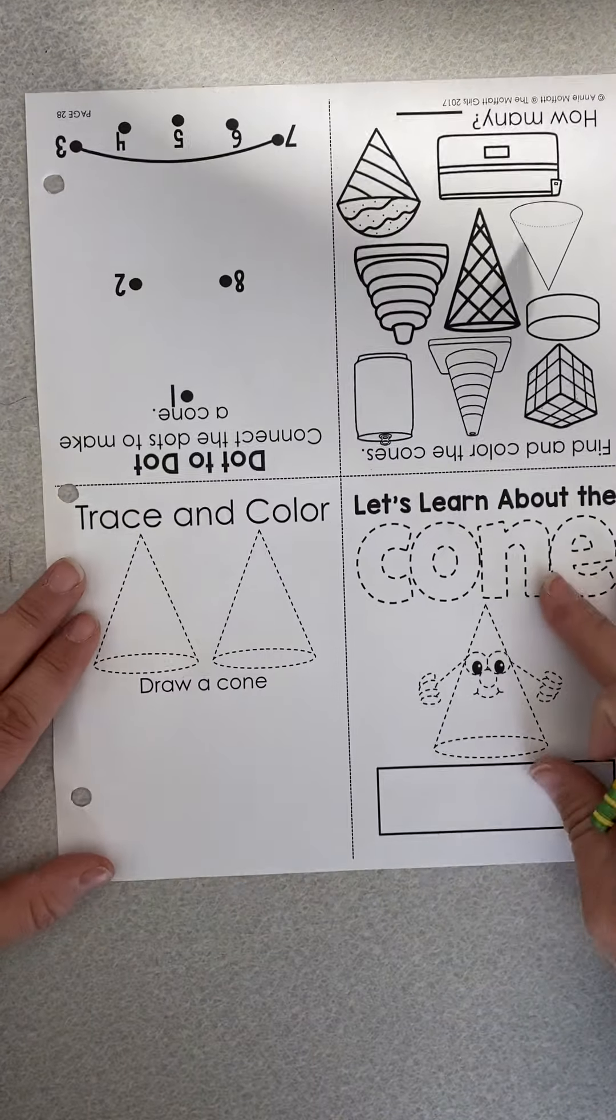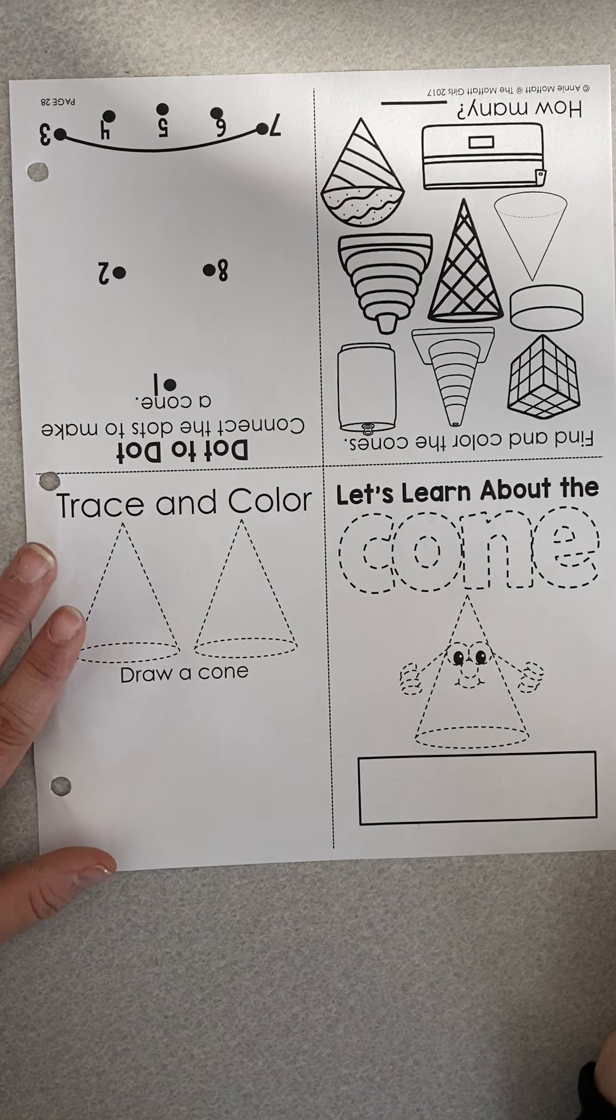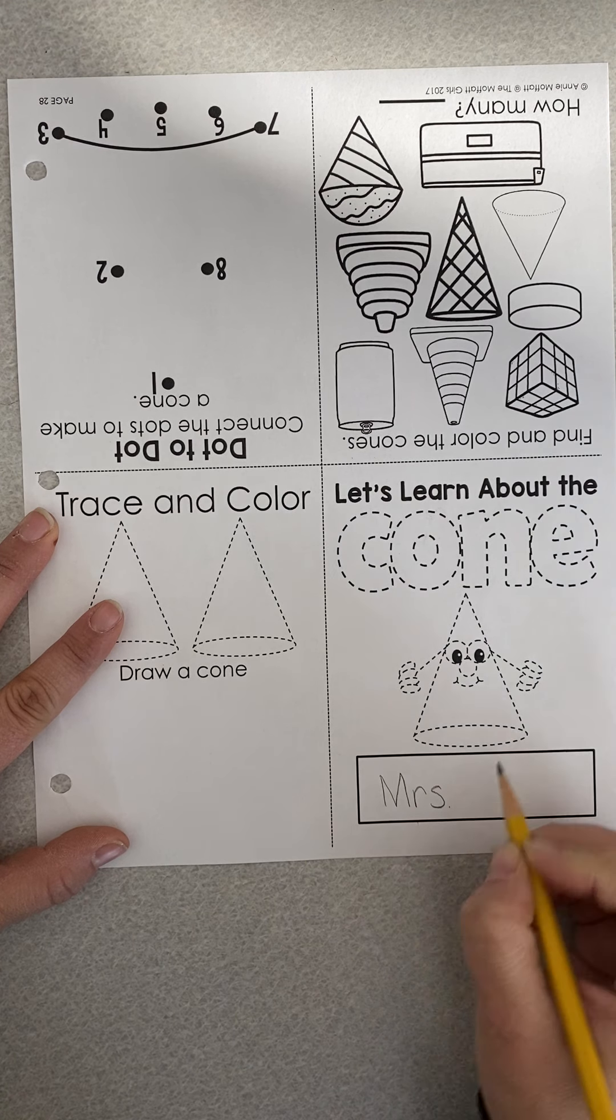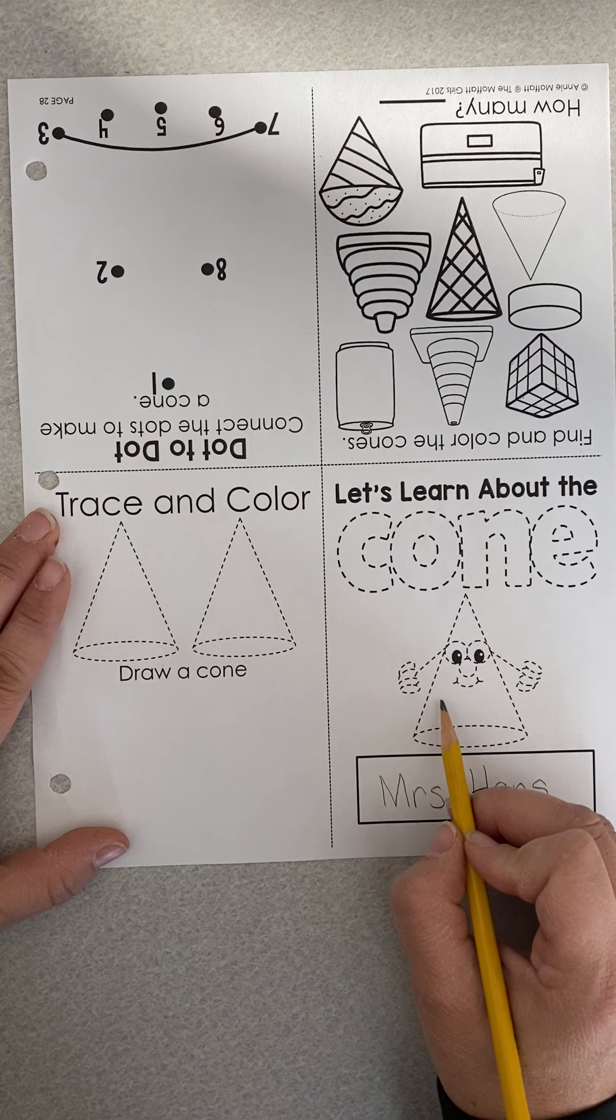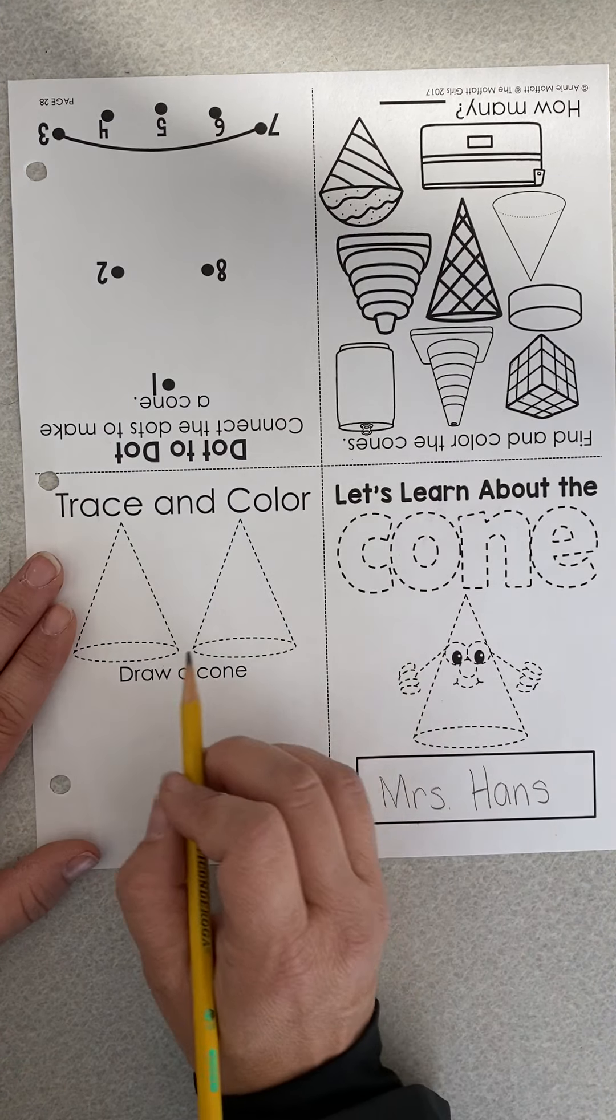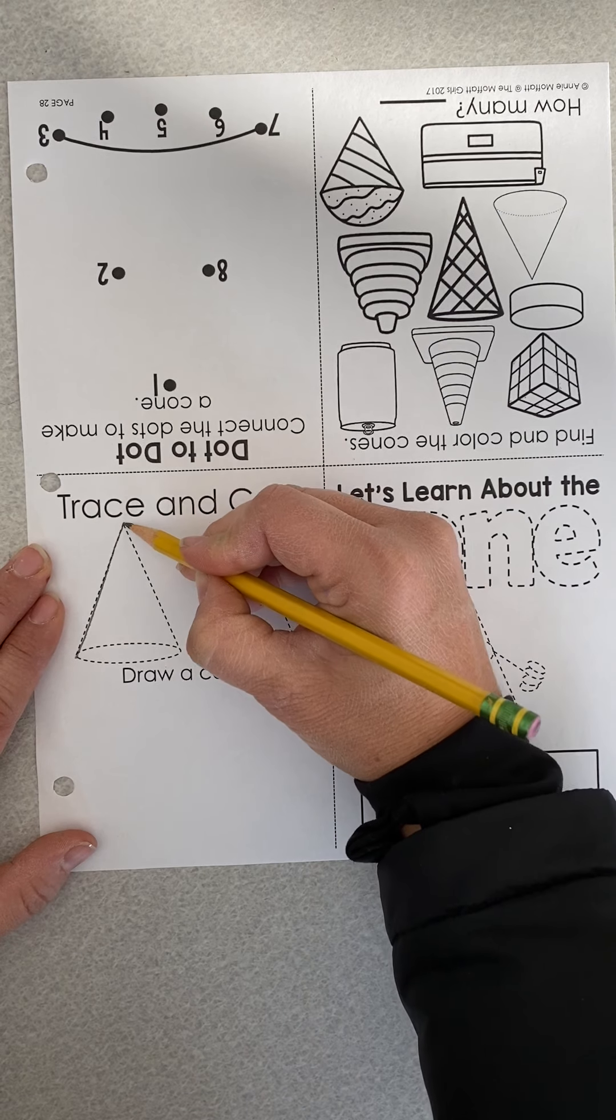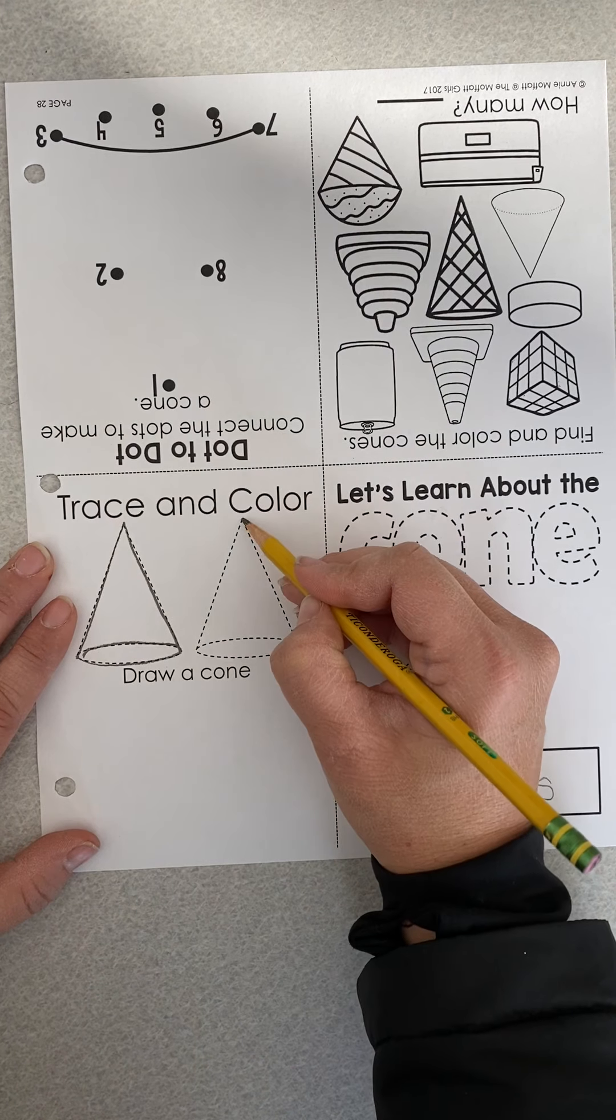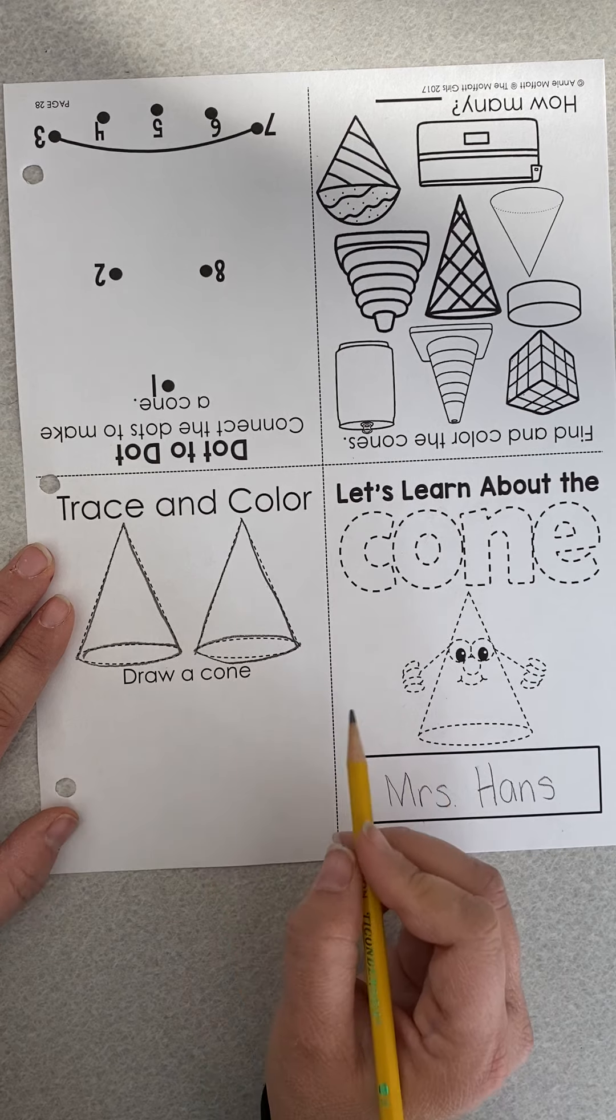Now we're going to do our math. Today we're going to be learning about the three-dimensional shape called a cone. Think of an ice cream cone. That's a good way to think of what a cone is, or even a party hat. So you're going to write your name in the box. Then you're going to trace all the dotted lines here and up here for cone. Then you're going to come and trace your cone here. I like to do, like I'm writing a capital A first. And then I draw a circle this way and a circle this way.